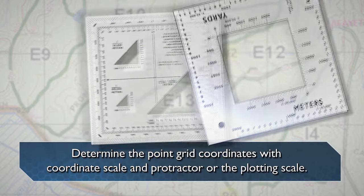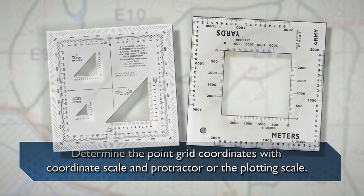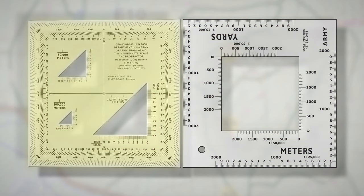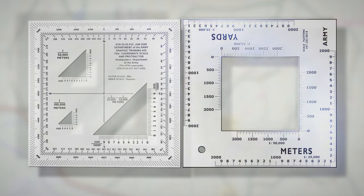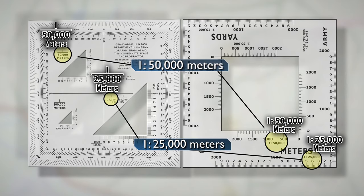Determine point-grid coordinates with coordinate scale and protractor or plotting scale. The most accurate way to determine the coordinates of a point on a map is with a coordinate scale. You need not imagine lines because you can find the exact coordinates using the coordinate scale and protractor or plotting scale. Each device includes two coordinate scales, 1 to 25,000 and 1 to 50,000 meters. Make sure that regardless of which device you use, you choose the correct scale.